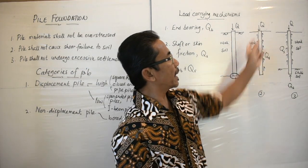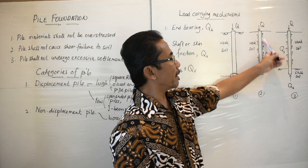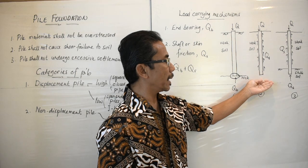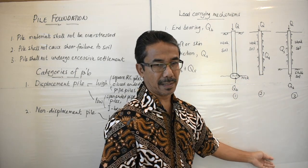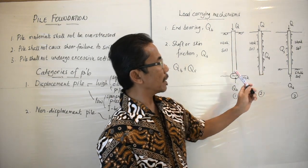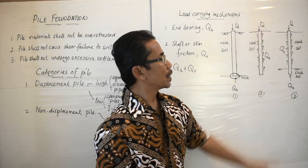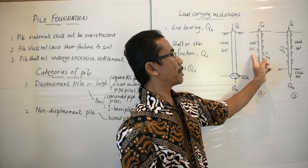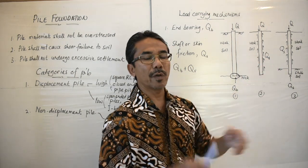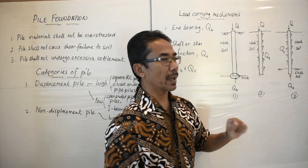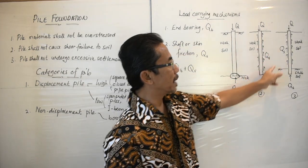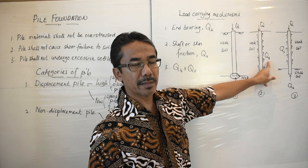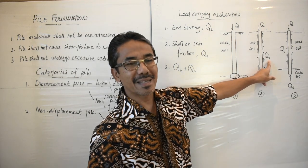The second case is when we have very thick weak soil, meaning the competent layer or rock layer is very far below the ground surface. When we install a pile and apply load Q, the load will be carried by the pile through skin friction or shaft friction between the pile and the soil. In that case, the load is carried by what we call shaft friction, also known as shaft resistance or skin friction.